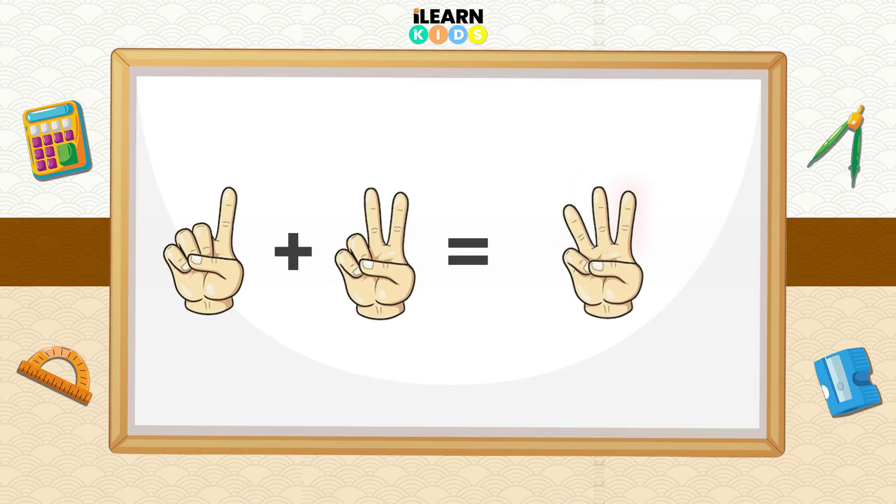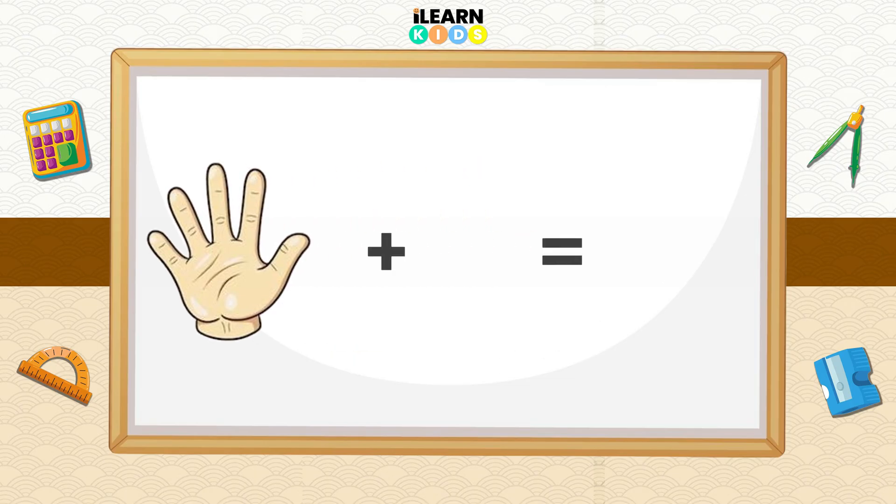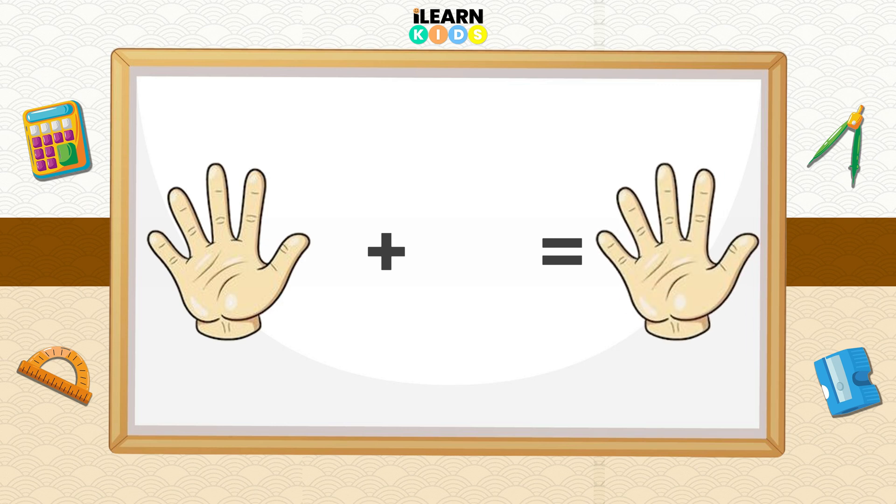Easy peasy! Now can you show me 5 fingers? Great! Now add zero fingers. How many fingers do you have? That's right, 5! Zero is a sneaky number - it adds nothing. Now let's move on.